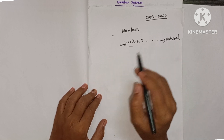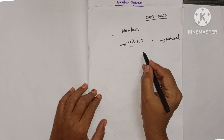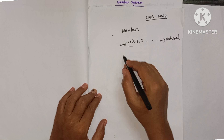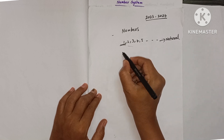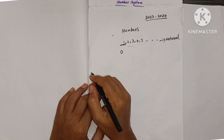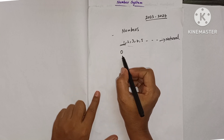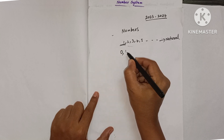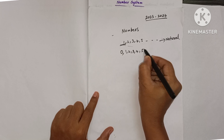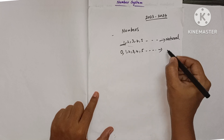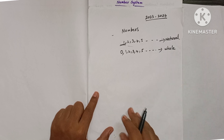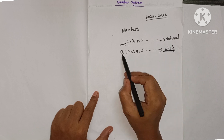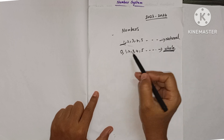After you eat the chocolates completely, how many chocolates do you have? Zero. So one new number, zero, is added to the counting numbers. When zero is added to the natural numbers or counting numbers, the numbers are called whole numbers — W-H-O-L-E, meaning complete.